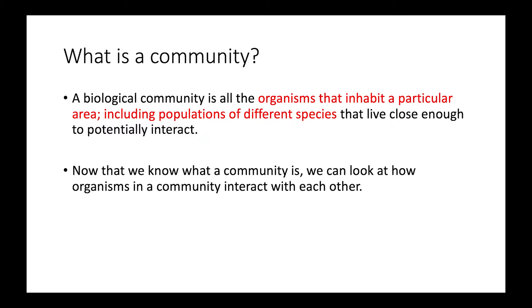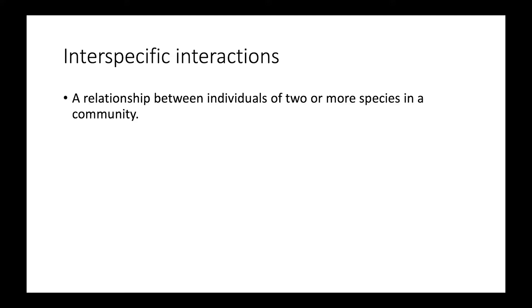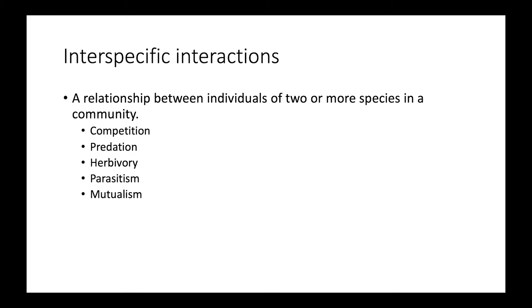Now that we have a better idea of what a community is, we can look at how different organisms within a community actually interact. These interactions are called interspecific interactions, meaning interactions between species — relationships between individuals of two or more species. Examples include competition, predation, herbivory, parasitism, mutualism, and commensalism.